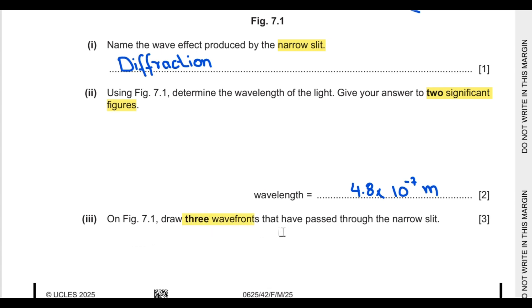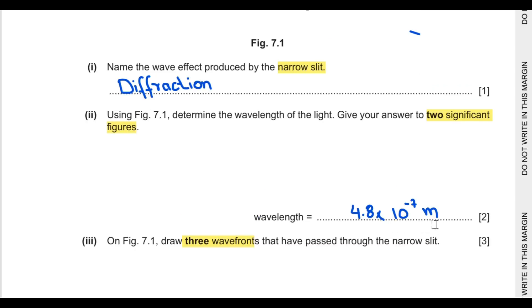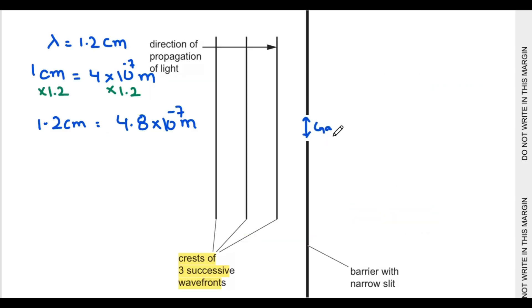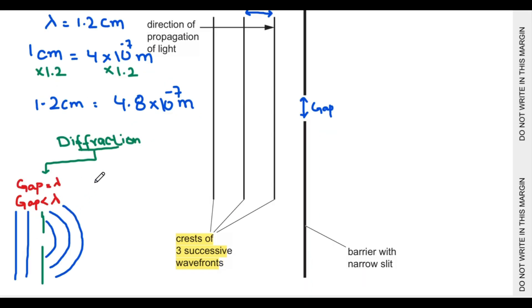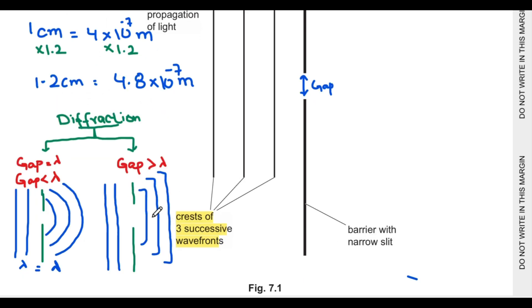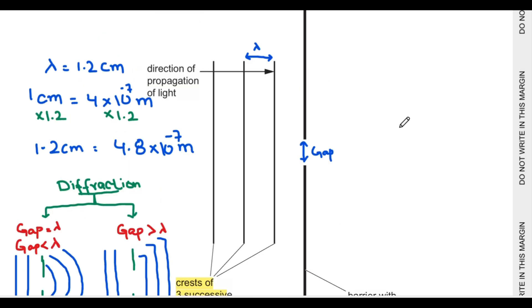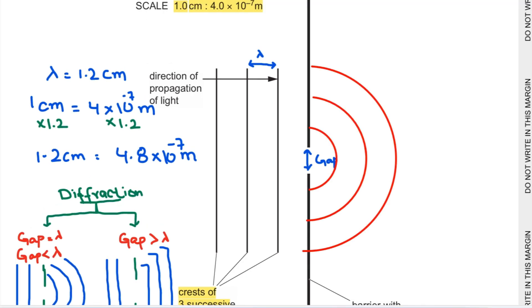Third part says on figure 7.1 draw three wave fronts that have passed through the narrow slit. This gap is comparable with the wavelength of the light. When the gap is equal to or less than the wavelength, the spreading of waves is very good and there are good circular patterns of diffraction obtained. Wavelength before diffraction equals wavelength after diffraction if there is no medium change. You can see the gap is comparable with the wavelength, so we achieve these good circular patterns.